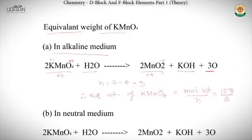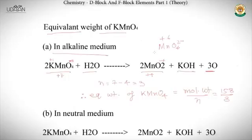An important intermediate: KMnO₄ first reduces to MnO₄²⁻ (manganate ion, green, oxidation state +6), but this is unstable and further decomposes to insoluble MnO₂ (colorless/brown). The color of KMnO₄ itself is purple. In neutral medium, the same reaction occurs (Mn goes +7 → +4), so n = 3 and the equivalent weight of KMnO₄ is again 158 / 3.